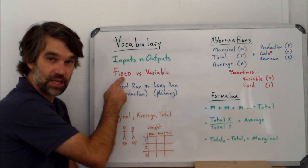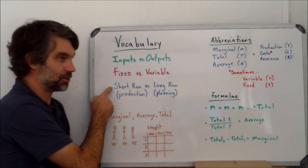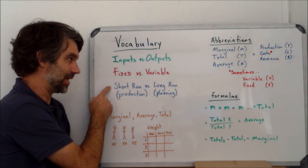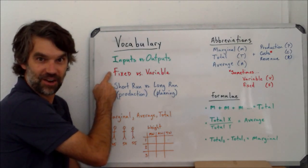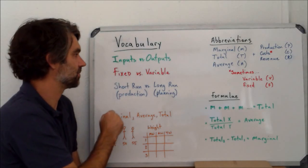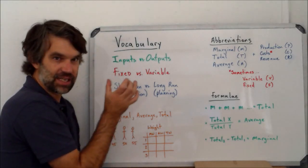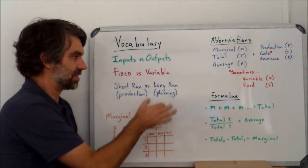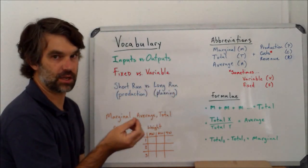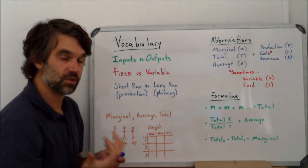Fixed means you can't change it in what we call the short run. So short run means that you have some fixed variables or fixed factors. Fixed means you can't change it anytime soon, whereas variable means it's easy to change, it's relatively simple.